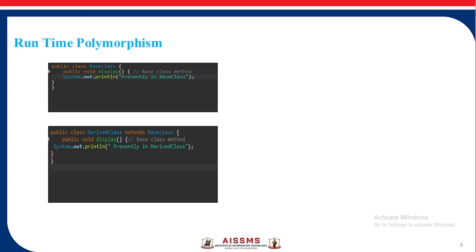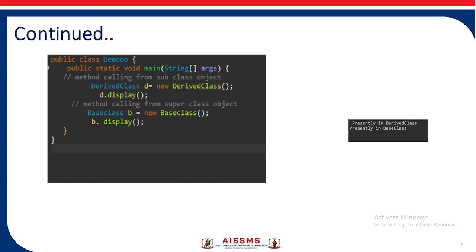Here is a runtime polymorphism example. A base class is written with a method `display` which has the statement 'presently in base class'. A derived class extends the base class and the same method `display` is written with the statement 'presently in derived class'. When we create an instance of the derived class and call `D.display`, we get the output 'presently in derived class'. When we create a base class object `B` and call `B.display`, we get the output 'presently in base class'.